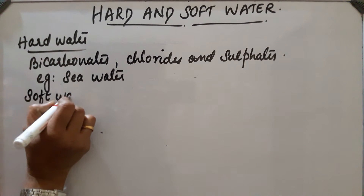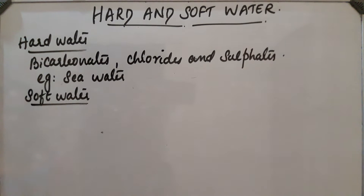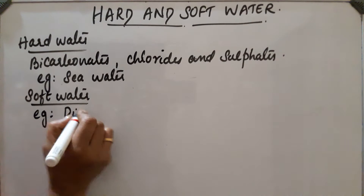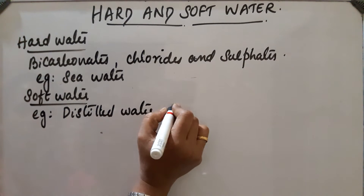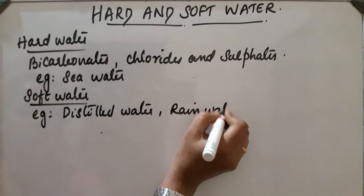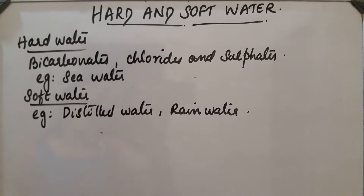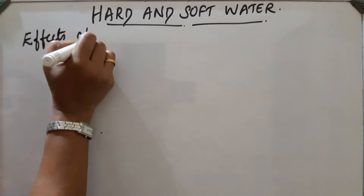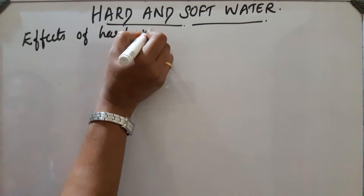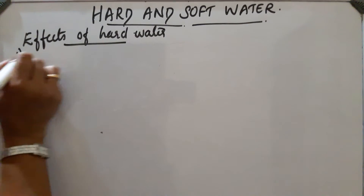The second type is soft water. It is the pure form of water. It does not contain any soluble salts like salts of calcium and magnesium — bicarbonates, chlorides, and sulphates. It is free from all salts. It gives lather with soap. Examples are distilled water and rainwater.